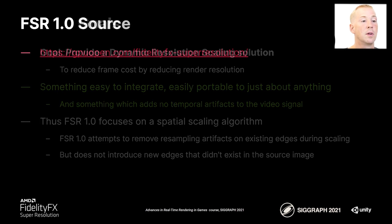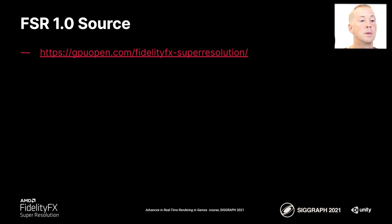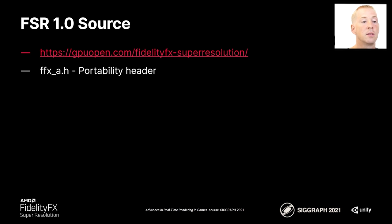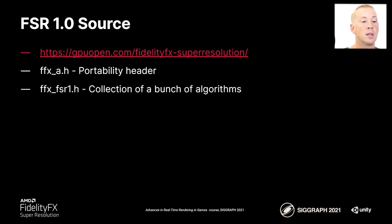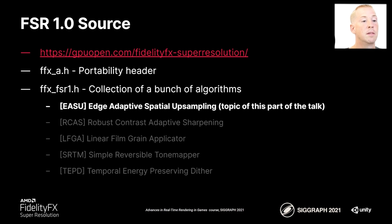The source code for FSR1 can be found on GPU Open. There are two components to the source code: a portability header and an algorithm header. The algorithm header has a collection of approximately five algorithms. The first one is the scaling algorithm, called EASU, or Edge Adaptive Spatial Upsampling, which I'm going to be covering now.